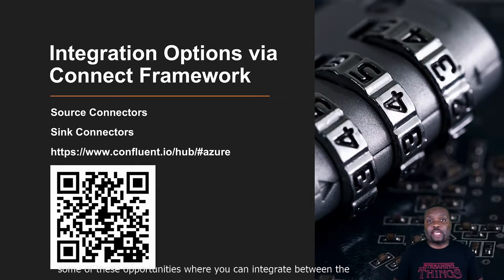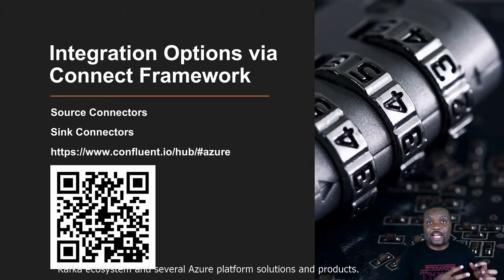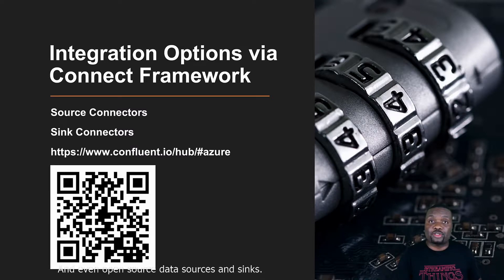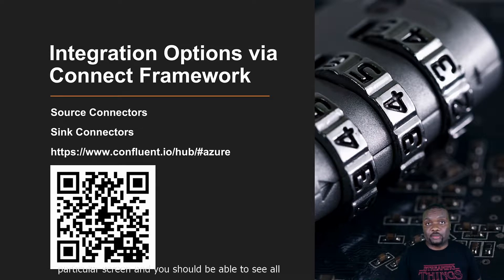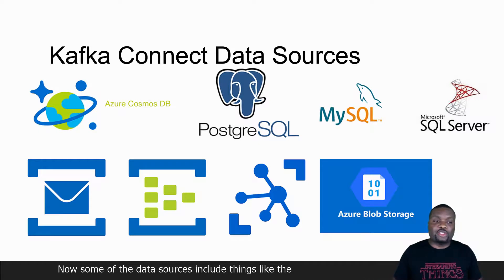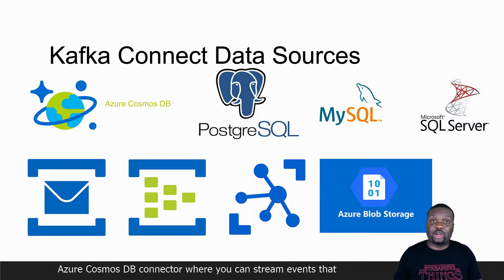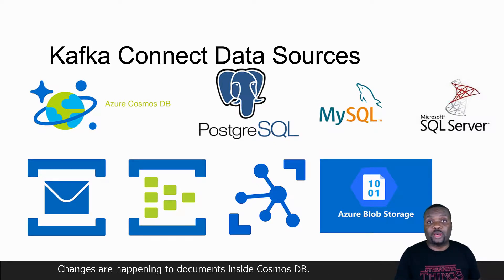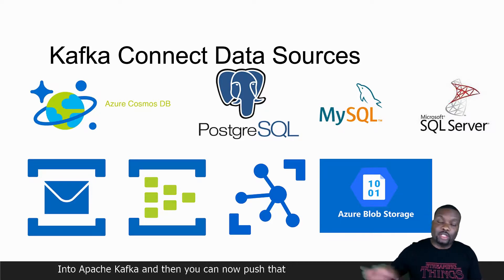If you are interested in opportunities to integrate between the Kafka ecosystem and several Azure platform solutions and products, and even open source data sources and syncs, you can take a look at the link on this particular screen. Some of the data sources include the Azure Cosmos DB Connector, where you can stream events and changes happening to documents inside Cosmos DB into Apache Kafka, and then push that out into other destinations.